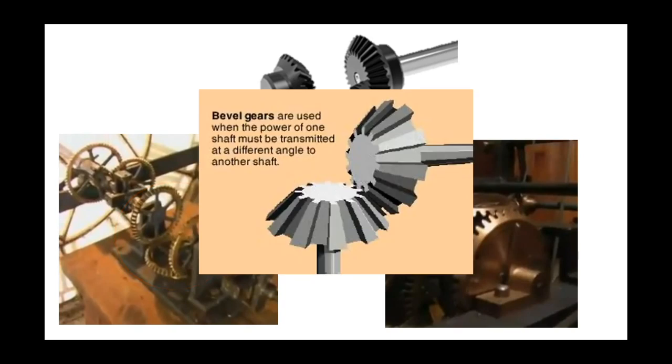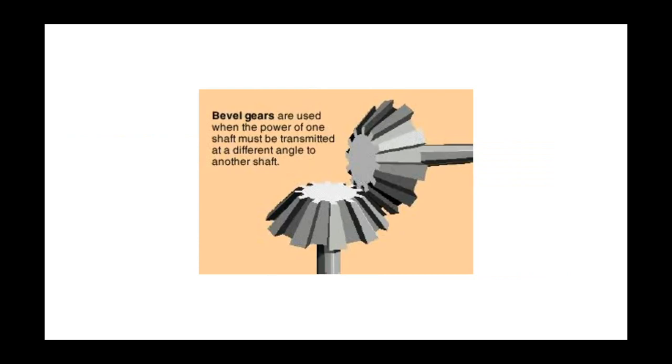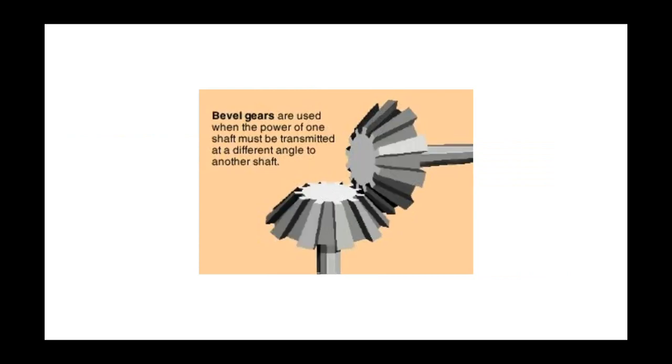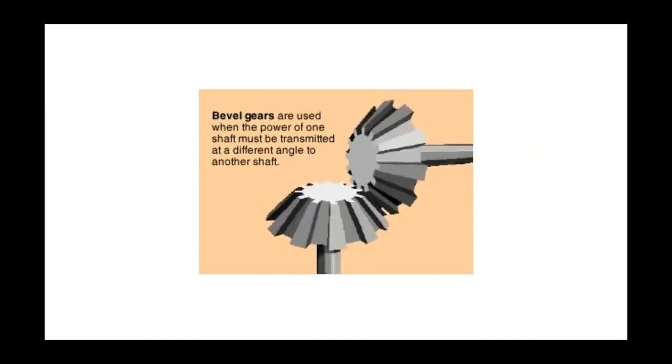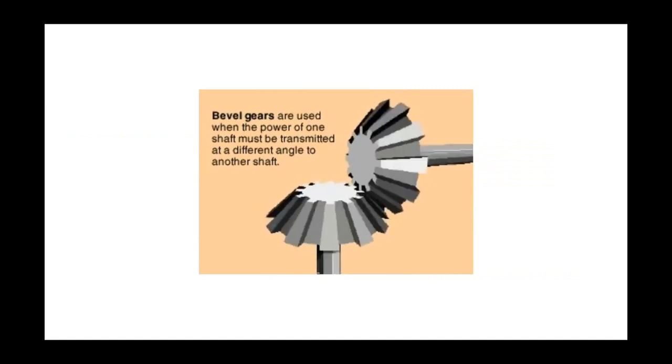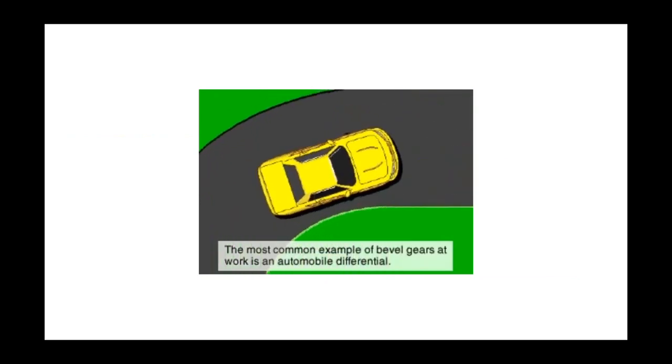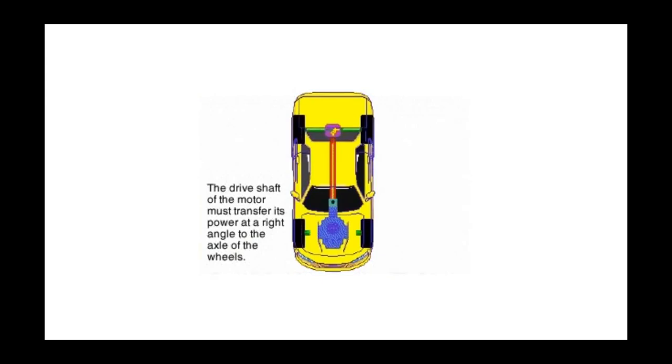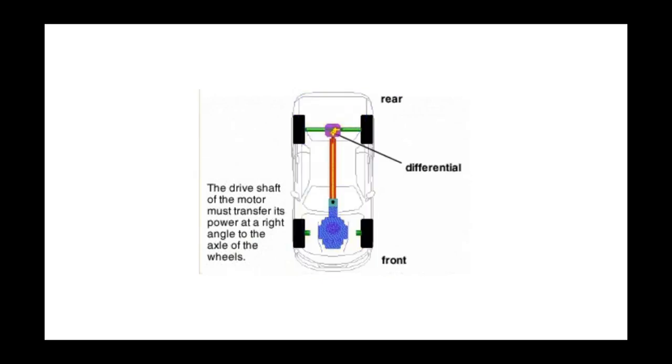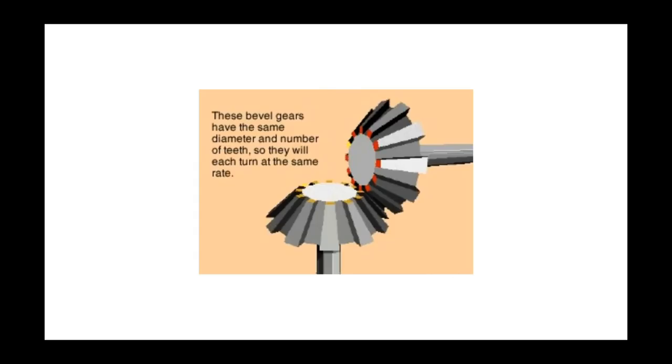Here is a short video about beveled gears. Gears transfer power. Bevel gears are used when the power of one shaft must be transmitted at a different angle to another shaft, often at a right angle. The most common example of bevel gears at work is an automobile differential where the drive shaft of the motor must transfer its power at a right angle to the axle of the wheels.